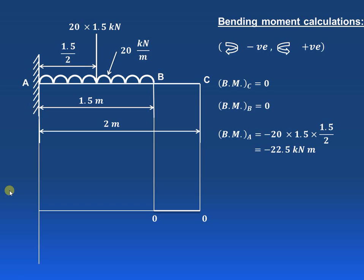Now let us draw the bending moment diagram. The conventions used are: clockwise moments are negative and anti-clockwise moments are positive. Starting from the right-hand support: bending moment at C is zero because there is no force on the right-hand side of C. Bending moment at B is also zero for the same reason. For bending moment at A, we consider all forces on the right-hand side of A — only the UDL acting over 1.5 meters.